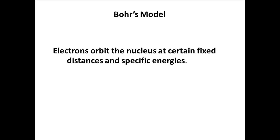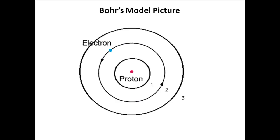Electrons orbit the nucleus at certain fixed distances and specific energies. The spectrum was produced when an electron dropped from a higher energy orbit to a lower energy one, giving off a specific amount of energy. Because his model looks a bit like the solar system, with the electrons orbiting the nucleus like the planets orbit the sun, it is sometimes called the solar system model.